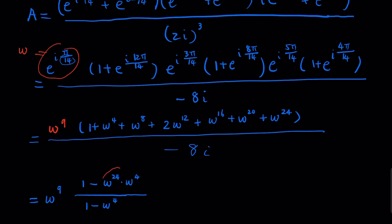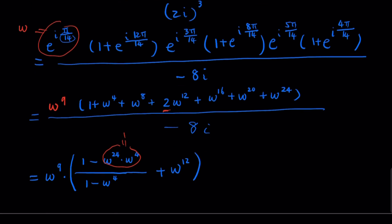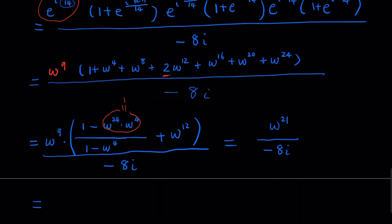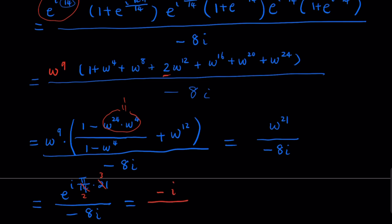So this part equals to one, so that's zero. But of course you have another term here. So in the numerator here, you plus ω to the 12th power, and then you divide everything by negative 8i. So what you get is (ω^12 + ω^9)/(−8i), which is ω^21/(−8i). This is e^(i21π/14)/(−8i), and this is −i/(−8i). The final expression is actually 1/8.